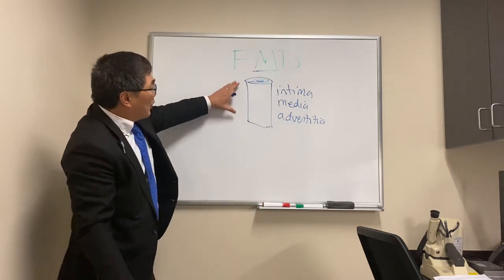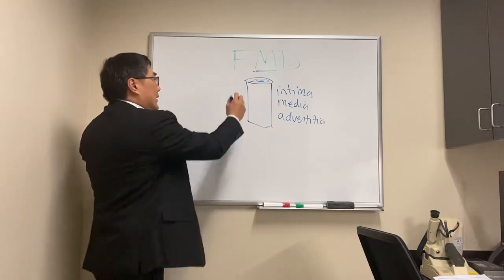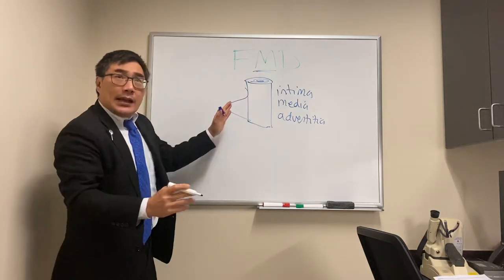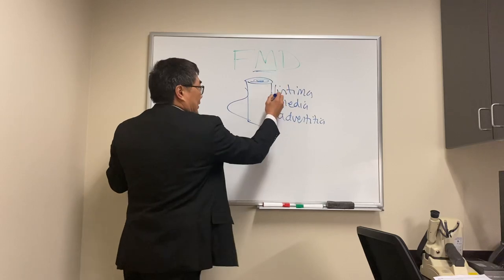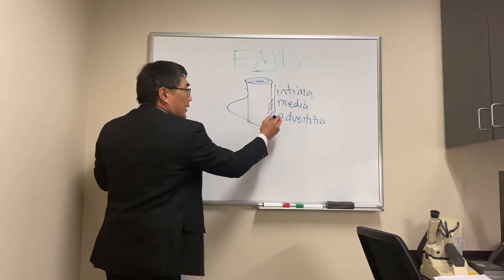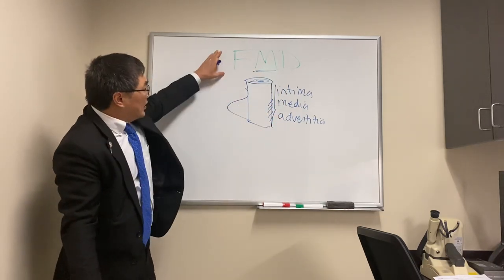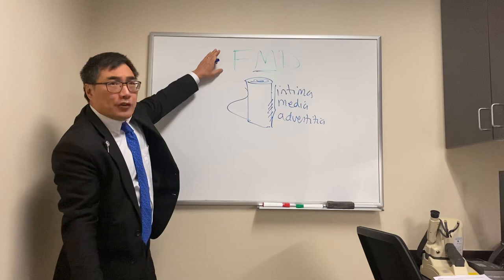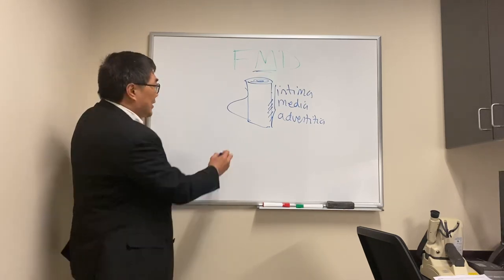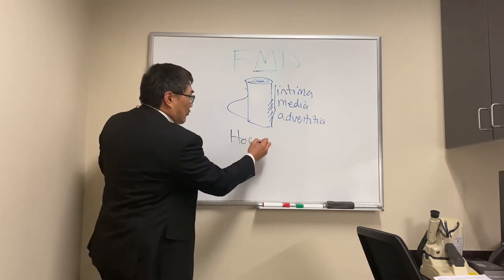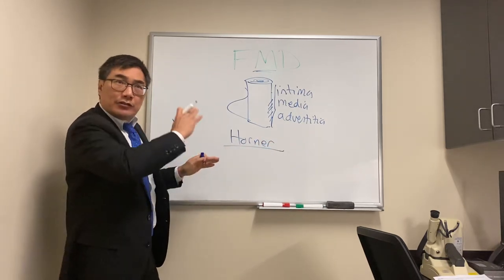When we have weakening in the wall, we can get an aneurysm — an outpouching — or we can get a dissection from a tear in the wall. The reason this is important for neuro-ophthalmology is that this can come to us as arterial disease.